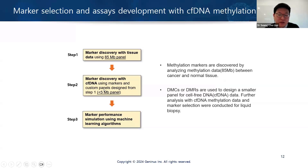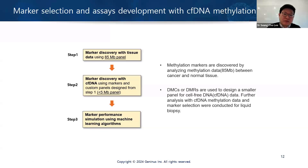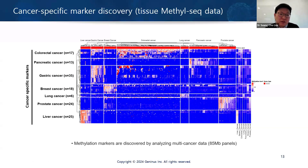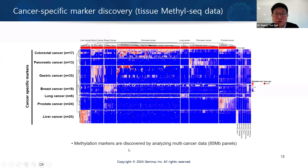We then designed custom panels from Twist, and we can make a multi-cancer panel or a cancer-specific panel. After that, we get data from ctDNA methylome, and we can also do more refined biomarker discovery using machine learning algorithms. Here's one example: you can detect multi-cancer in one custom panel using tissue data. Different types of cancer have unique methylation patterns, and using methylome panels you can discover these markers. To increase sensitivity, you may need to focus on specific biomarkers.